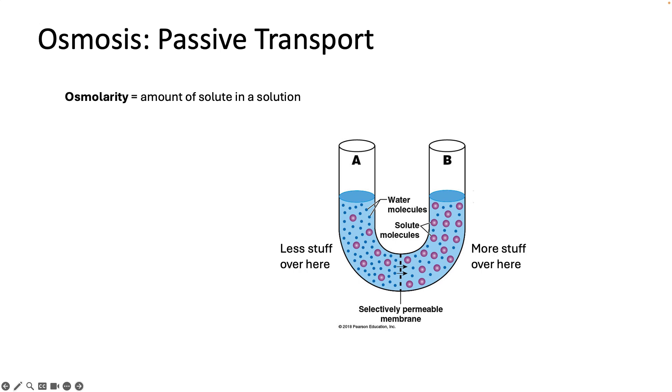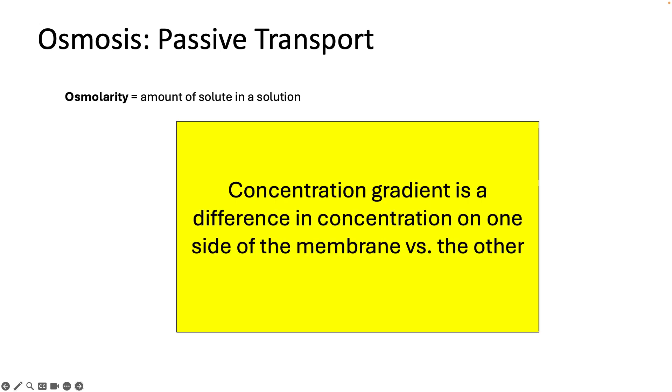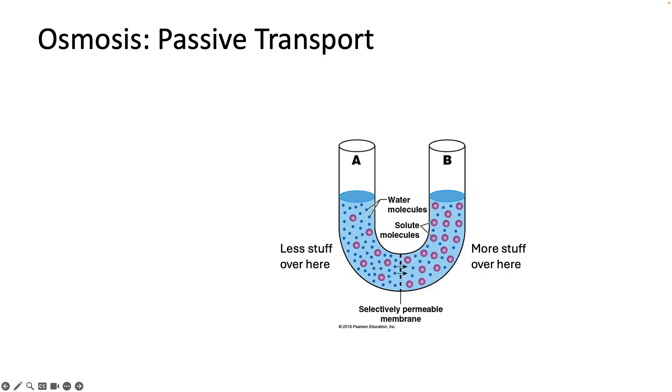So the concentrations on each side of the membrane are different. Remember, this is our definition of a gradient: a difference in concentration on one side of a membrane versus the other side of the membrane. You would expect if the purple dots could move, they would move down their gradient from the right towards the left, down their gradient.